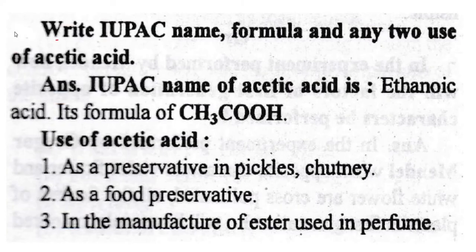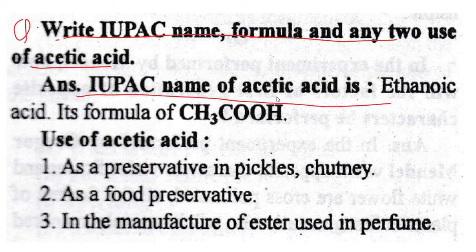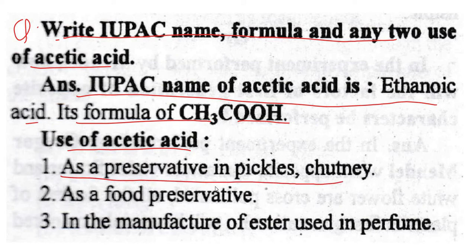Next question: Write the IUPAC name, formula, and any two uses of acetic acid. IUPAC name of acetic acid is ethanoic acid. Its formula is CH3COOH. Uses: first, as a preservative in pickles and chutney; second, in the manufacture of esters used in perfumes.